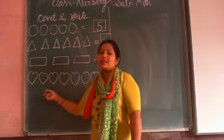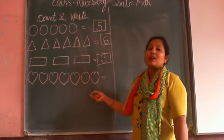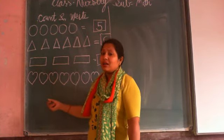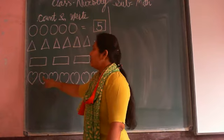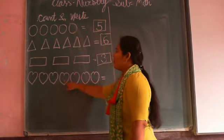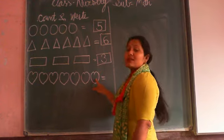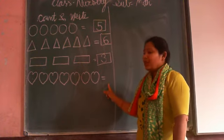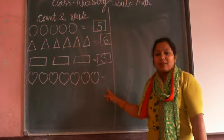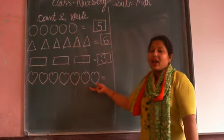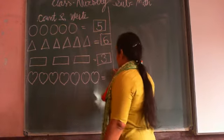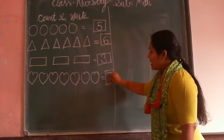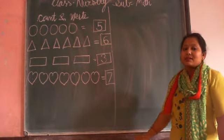Then which shape is this? Heart shape. Okay. First we count how many shapes are here. Count with me: one, two, three, four, five, six, seven. How many? Seven. Seven heart shapes. So here we write number seven. And how to make number seven? One sleeping line and one slanting line make number seven.